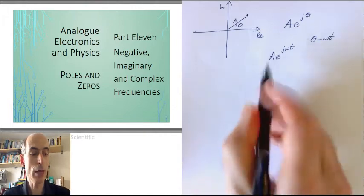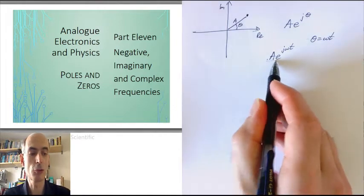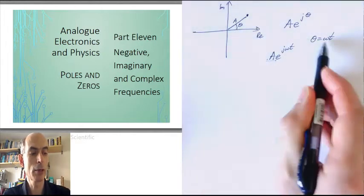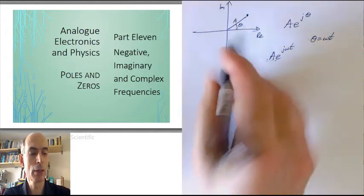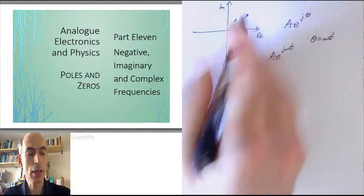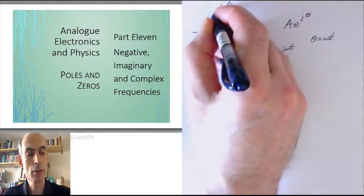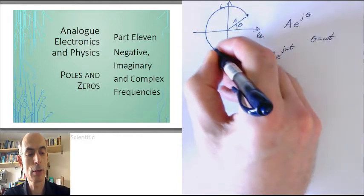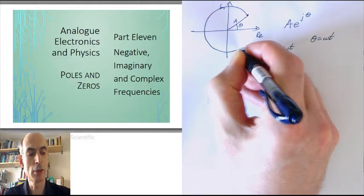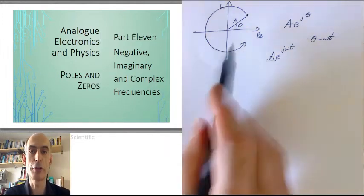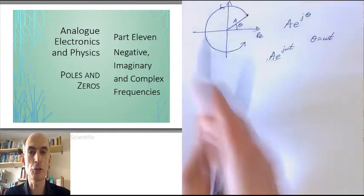Now its amplitude is always a, so its distance from the origin is always a, but its phase angle is now linearly increasing with time. So that means that this point here would be moving around the origin in an anti-clockwise direction like so. And that would be a positive frequency of a complex oscillation.